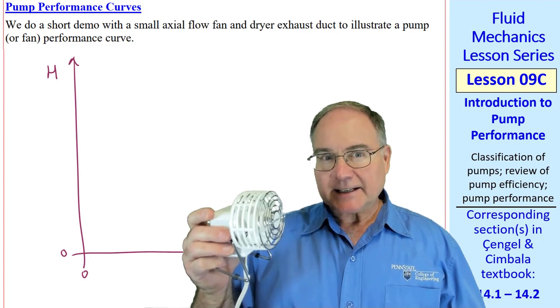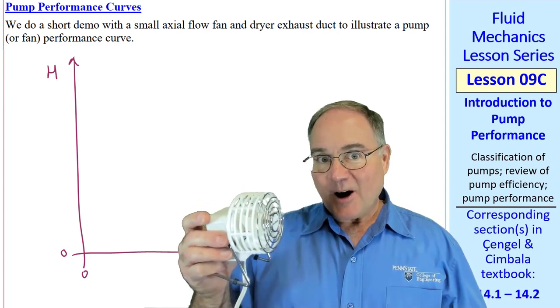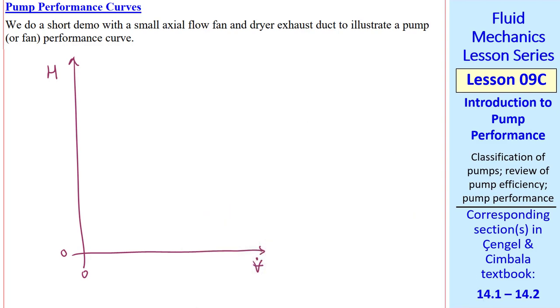If this fan is not connected to any kind of pipe, and it's running, it's not doing any useful work on the pipe system. When the head is zero and there's a large volume flow rate, our pump performance is at this point. In other words, V dot is a maximum when H is zero. People call that the free delivery point.